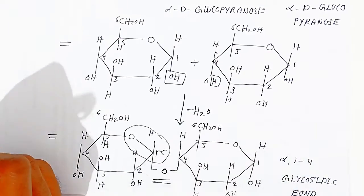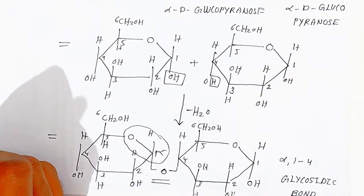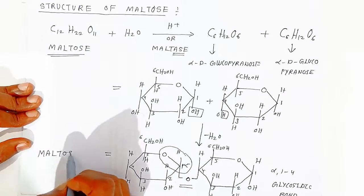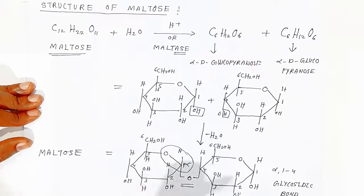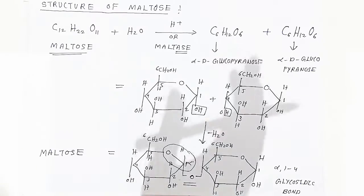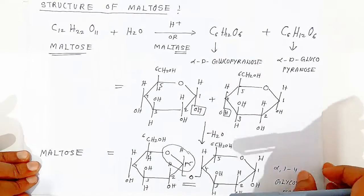With the help of this alpha-1,4 glycosidic bond, the two monosaccharides are bonded together, giving the structure of maltose. Now we are going to see the structure of lactose.